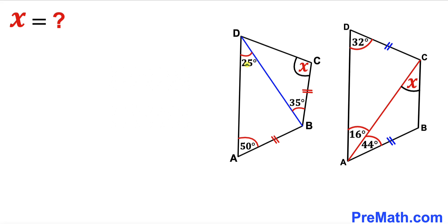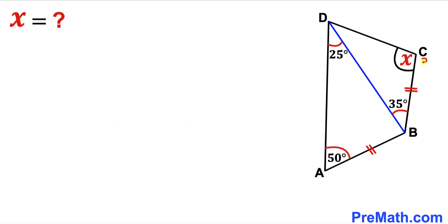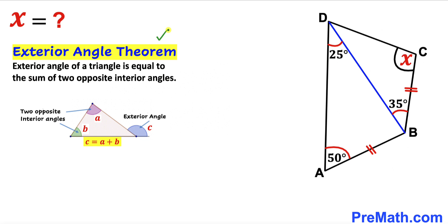Let's get started with the first puzzle. We have quadrilateral ABCD such that this angle is 25 degrees, this angle is 50 degrees, and this angle is 35 degrees. Moreover, segment AB is equal to segment BC. Our task is to find the value of angle x. We can observe that 50 degrees is twice 25 degrees, so let's recall the exterior angle theorem.